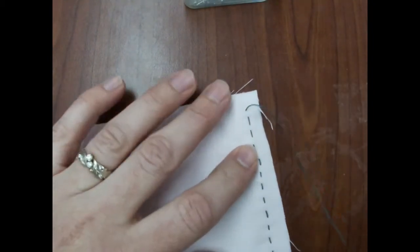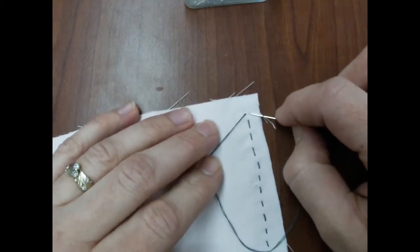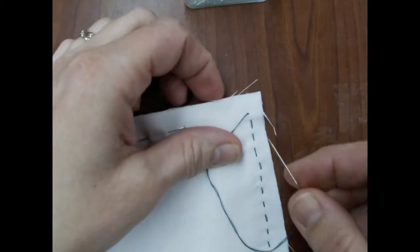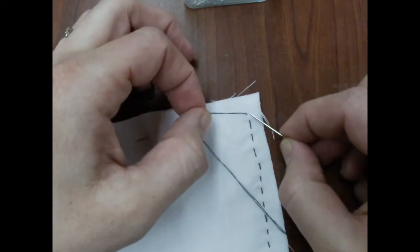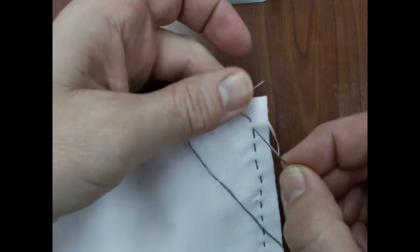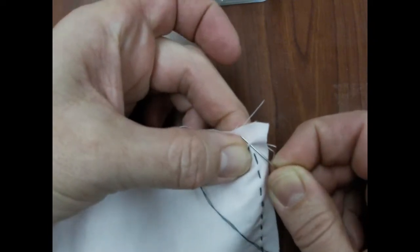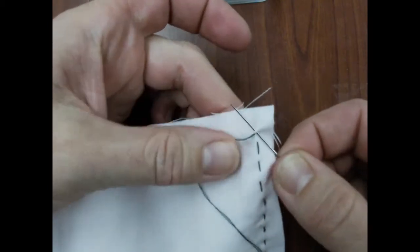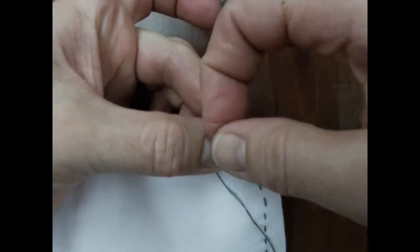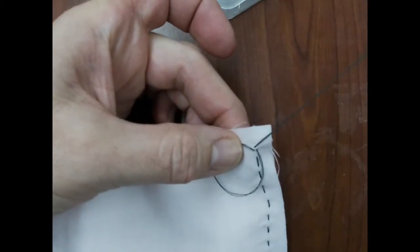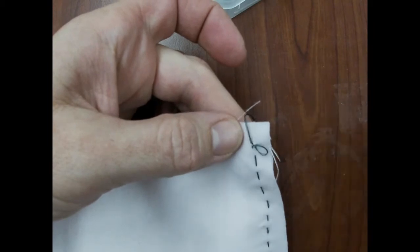A finishing knot is how we get what we have sewn together to stay where we put it and not unravel. So right where the last stitch comes out of the fabric, you want to use your needle to lift a couple of little threads of the fabric, and going through and back up like you're doing a stitch. But you're going to pull that stitch and stop once you have a loop.